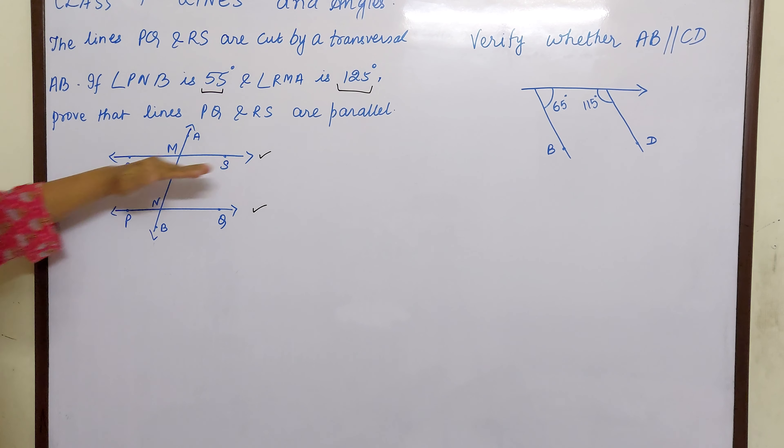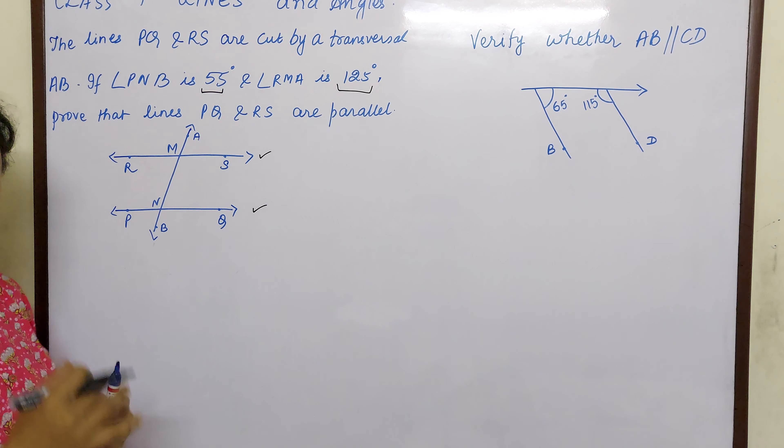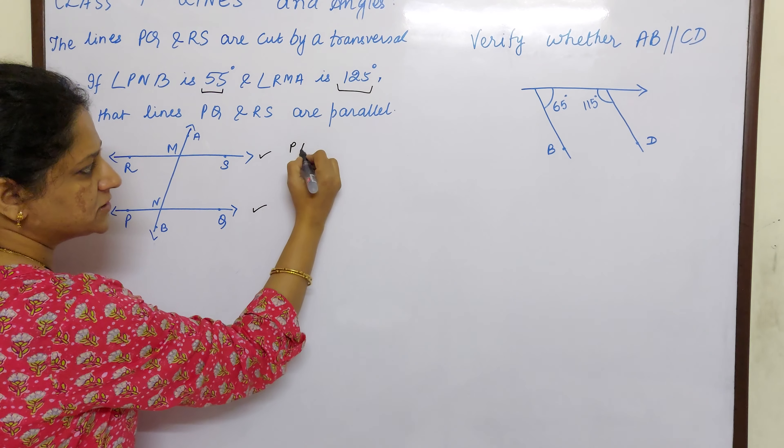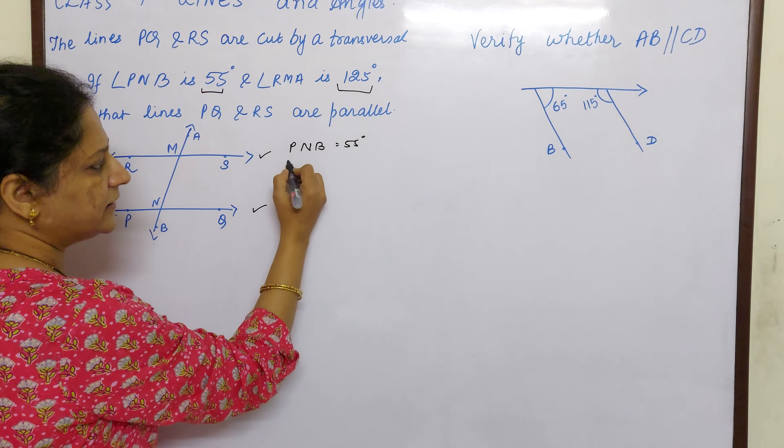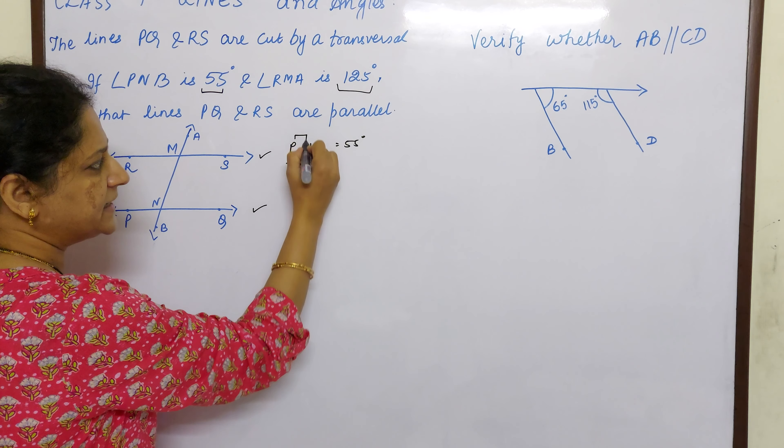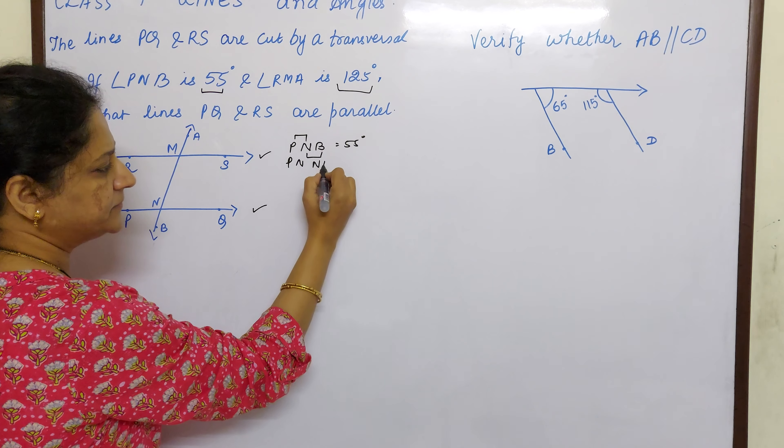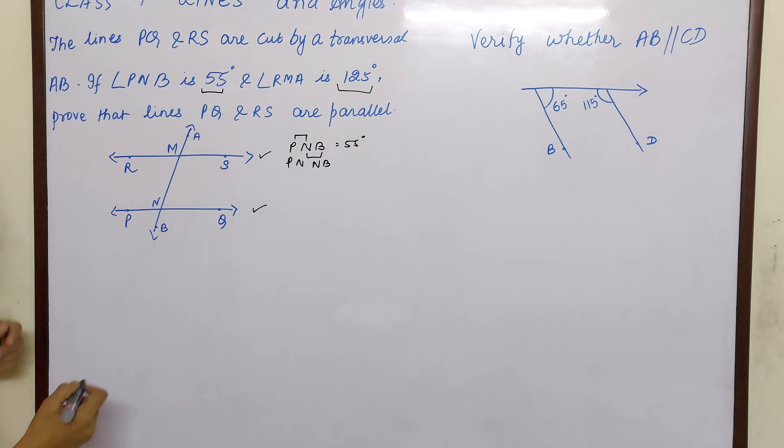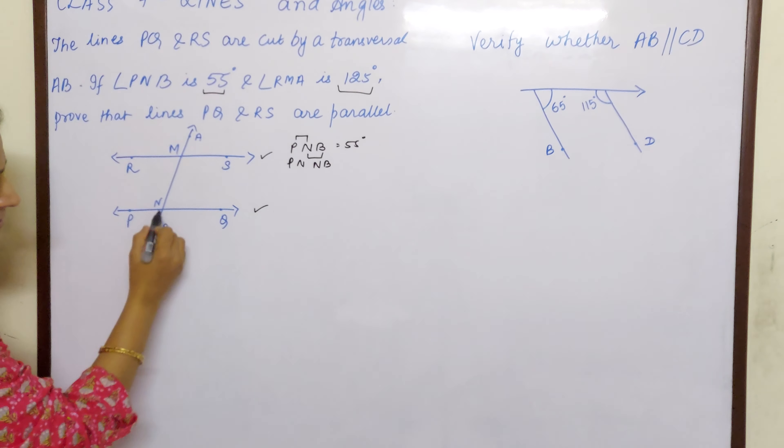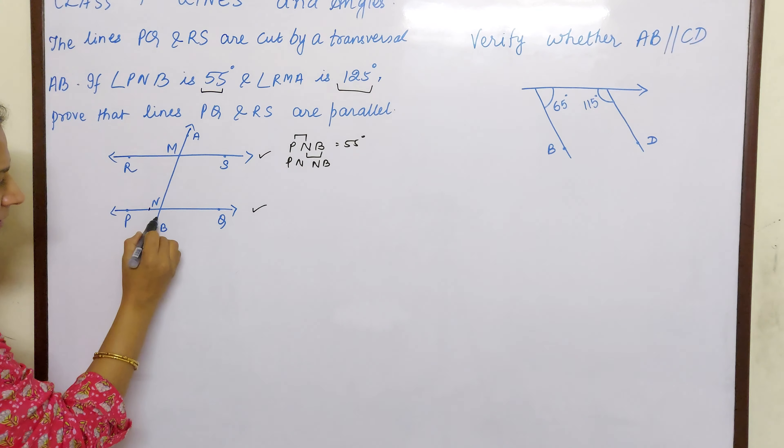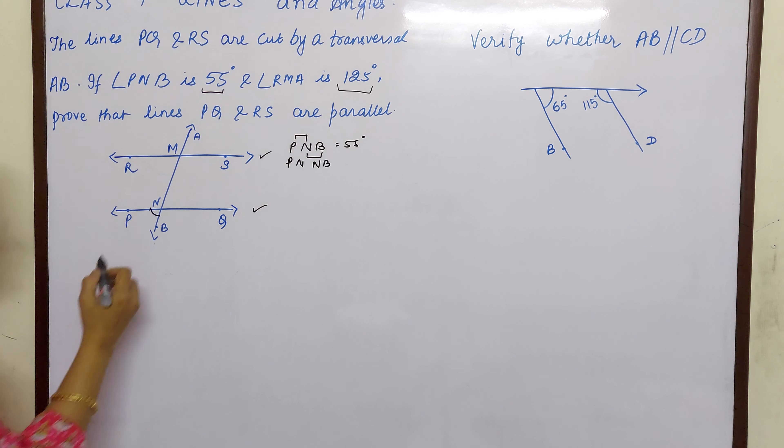So we have to prove that this line is parallel to this line. Now angle PNB is 55 here. Let us see how to mark PNB. What did I teach you children? If you are getting confused, which is PNB is 55? So you can write this two times. This is P and B plus NB. Okay, so where is PNB children? PNB is here and NB is down. So PNB. So this is 55 degrees.